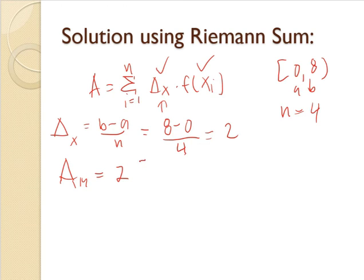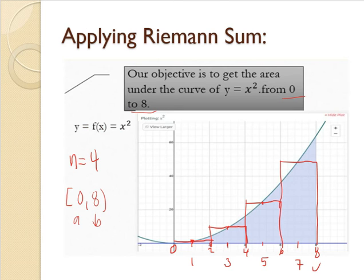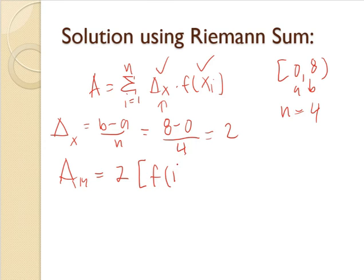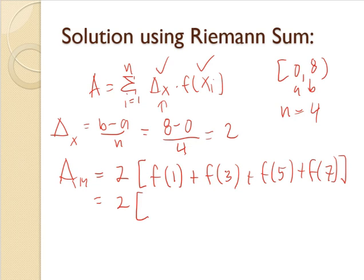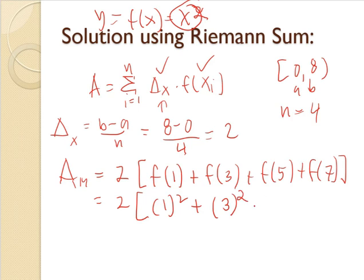And then f of x sub i, we have 4. First is the first midpoint. Our midpoints are 1, 3, 5, and 7. So this is written as f of 1 plus f of 3 plus f of 5 and then plus f of 7. And then we substitute the value of the midpoints to our given y equals f of x equals x squared. So for 1, 1 squared. We substitute 1 to x, 1 squared and then we have 3 squared plus 5 squared. And then lastly, 7 squared.